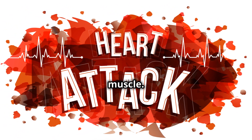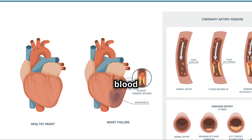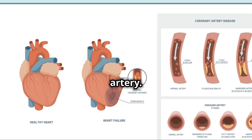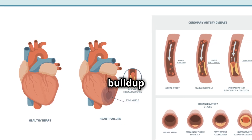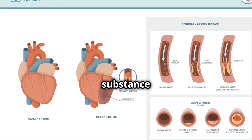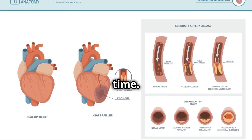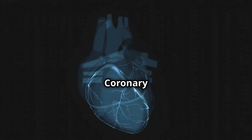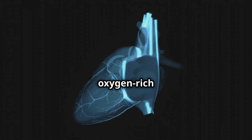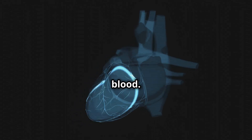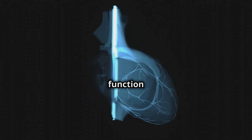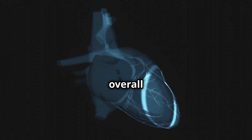This blockage is usually caused by a blood clot forming in a coronary artery. The clot can form due to the buildup of plaque — a fatty substance that narrows the arteries over time. Coronary arteries are the blood vessels that supply the heart with oxygen-rich blood, and they are essential for maintaining the heart's function and overall health.